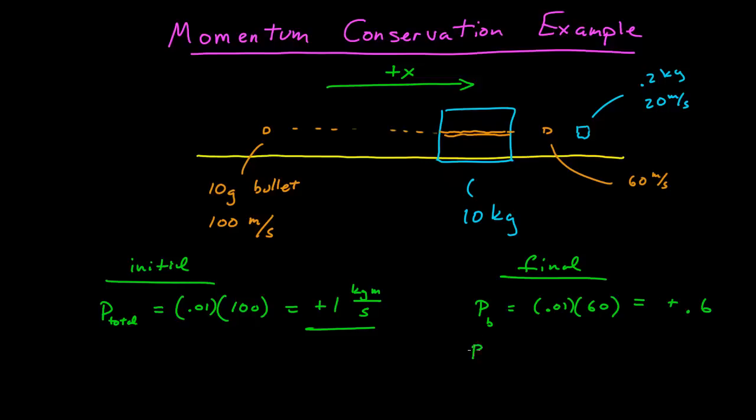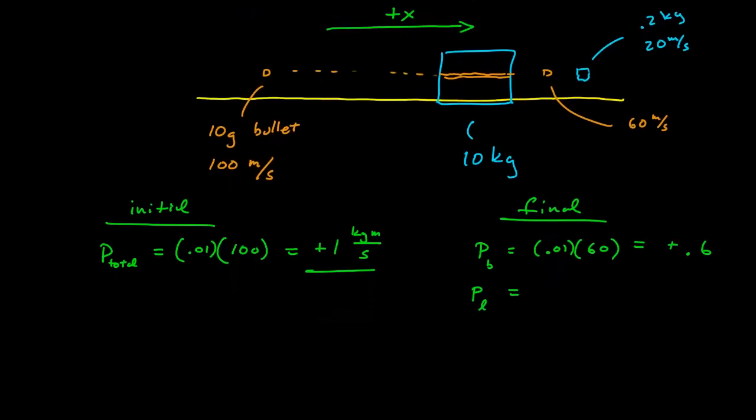And then we have the momentum of the leftover, we'll call that p sub l, and that's 0.2 kilograms times its velocity which is 20, and so that's a plus 4.